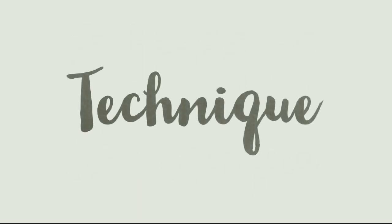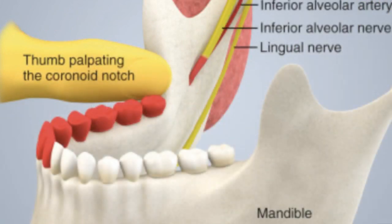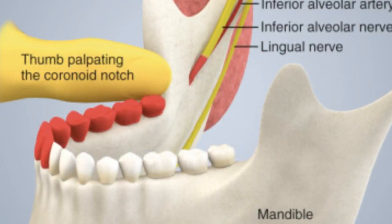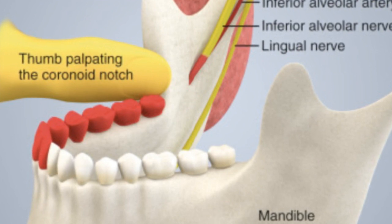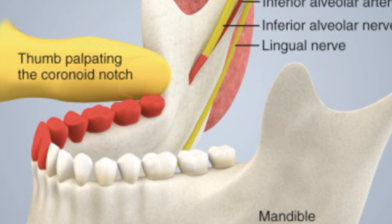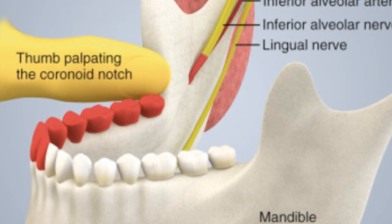How to give the lingual nerve block? It is similar to the inferior alveolar nerve block. When you give the inferior alveolar nerve block, at the end, you need to withdraw the needle two millimeters in order for the lingual nerve to be anesthetized.